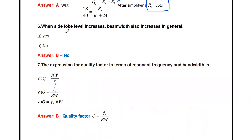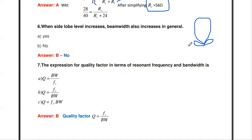Next question: when the side lobe level increases, the bandwidth also increases — true or false? In a radiation pattern, when the side lobe level increases, the beam width also increases. The answer is no — if the side lobe level increases, the bandwidth does not increase.